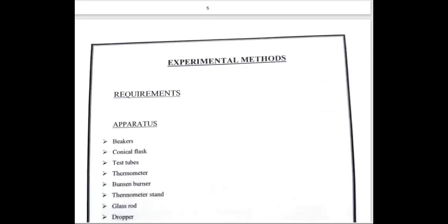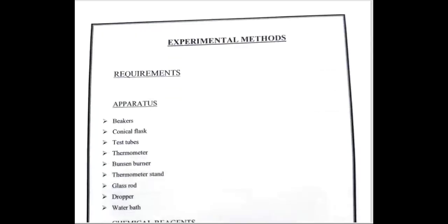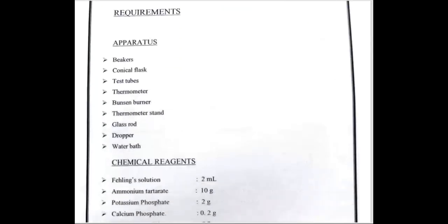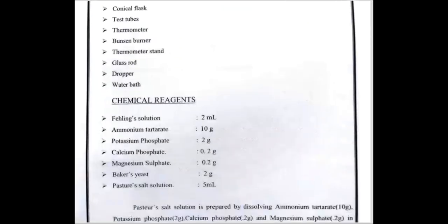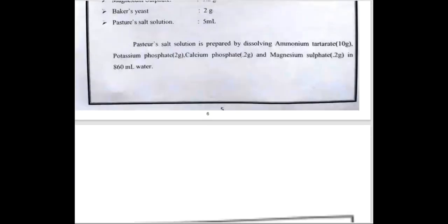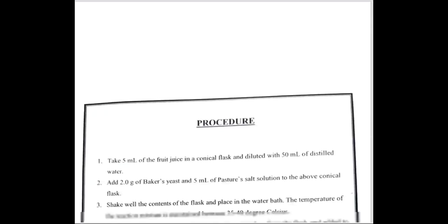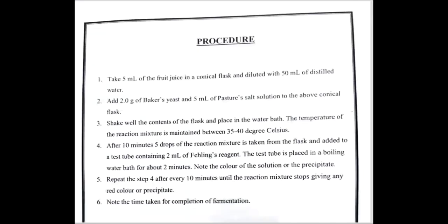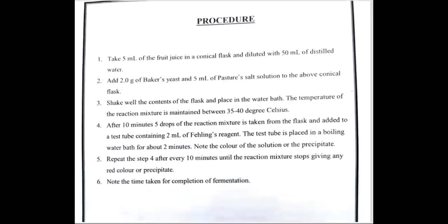Experimental methods contain the requirement, apparatus, chemicals, and reagents. Then the procedure section, where a detailed procedure is given.